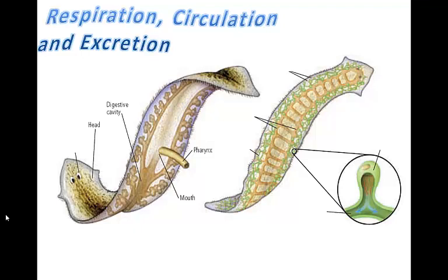Unlike sponges and cnidaria, flatworms have an excretory system. They have small tubes that run throughout their body. On the side branches of the tubes, there are bulb-like flame cells lined with cilia that sweep water and excretory substances into the tubules. Because flame cells move water out of the body, they keep the flatworm from becoming waterlogged. In addition to the flame cells, flatworms also excrete waste products and maintain homeostatic water balance through their mouth.